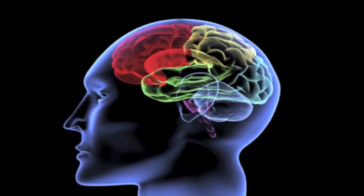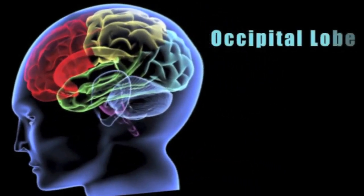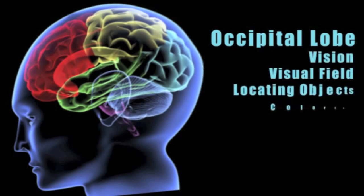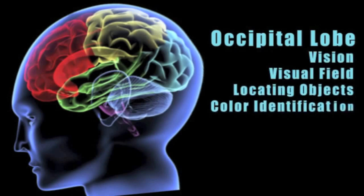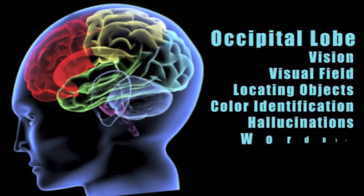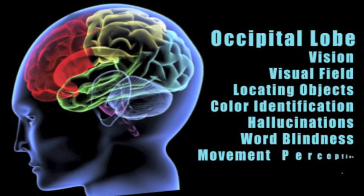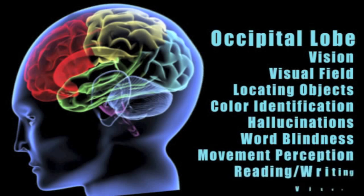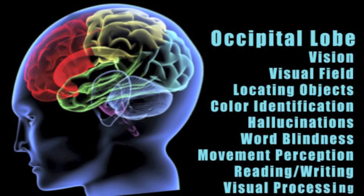When a client has damage in the occipital lobe, I see issues of vision defects — loss of the visual field and problems visually locating objects. There are problems identifying colors, distorted vision, and hallucinations. People can have something called word blindness, an inability to perceive the way objects move, and problems with reading and writing. There is an overall slowed processing of the way our brains handle visual information.